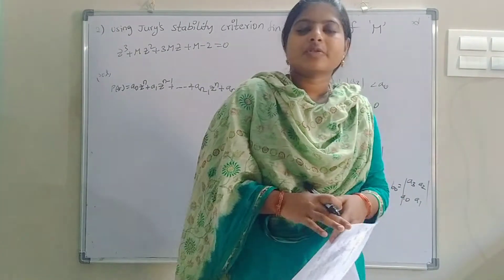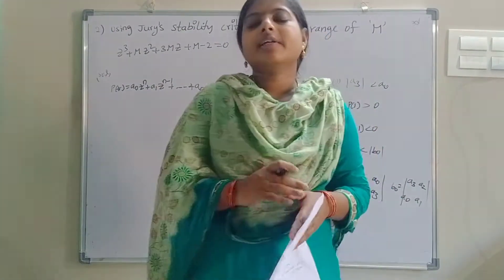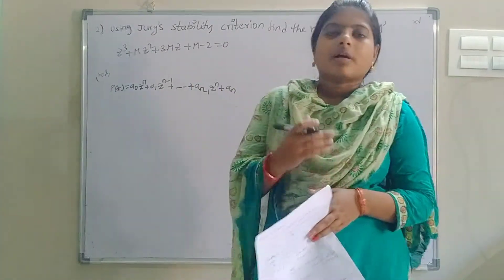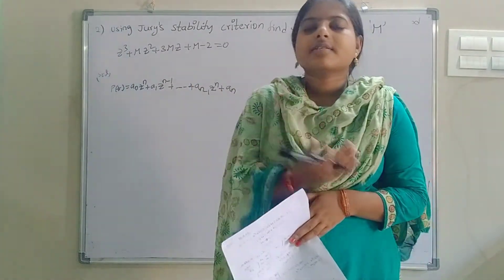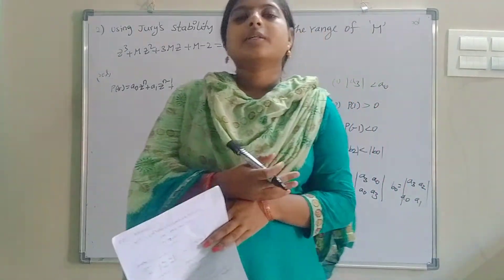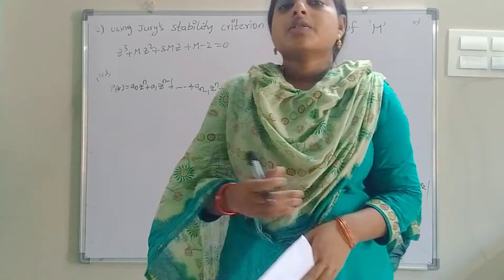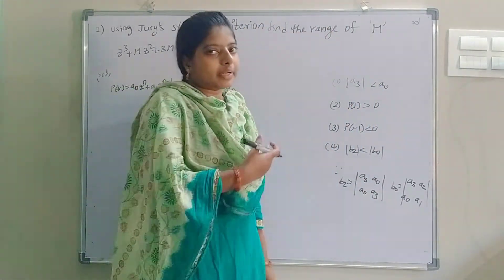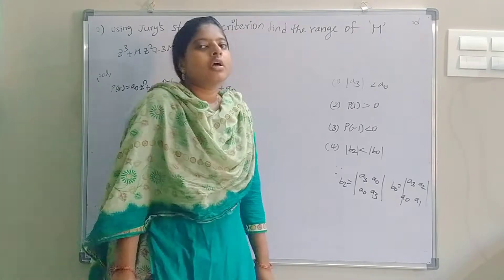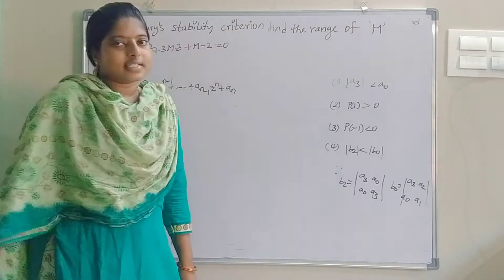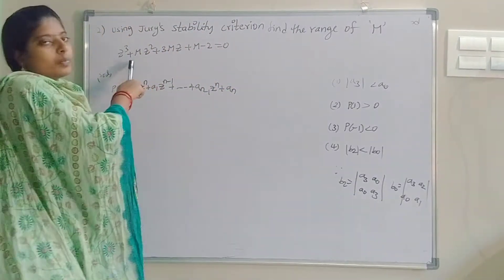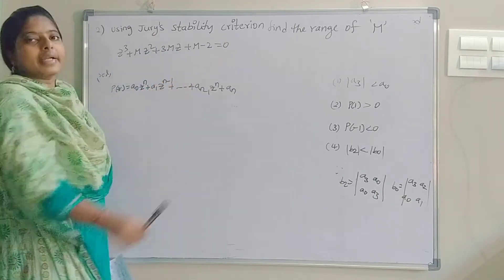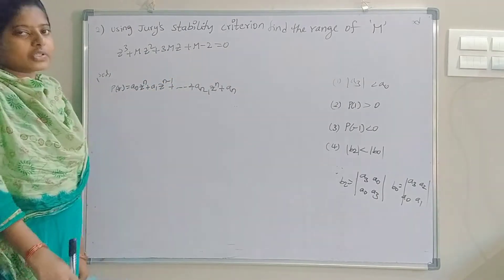Good morning all. Today I will discuss Jury's stability criteria. Last class I discussed the root stability criteria. So now we will find out the M range. The given characteristic equation is z³ + mz² + 3mz + (m - 2) = 0.